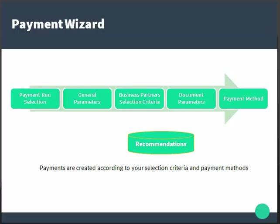The graphic shows the steps of the payment wizard. First, each run is identified by a payment run name and date. Then you specify several selection criteria such as general parameters, where you mention the date of the next planned payment run, the run type (outgoing or incoming), your payment means such as check or bank transfer, and the document series used to create payment documents.